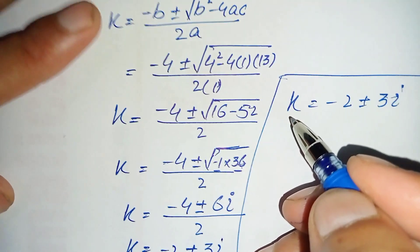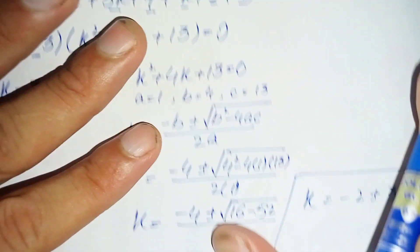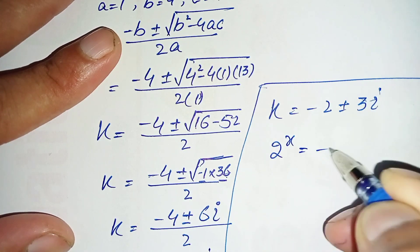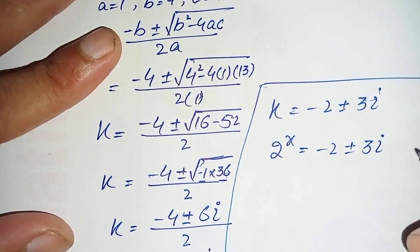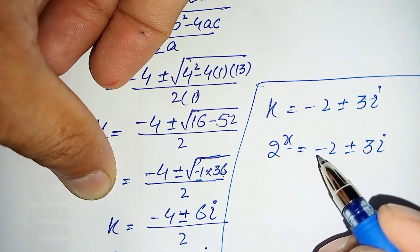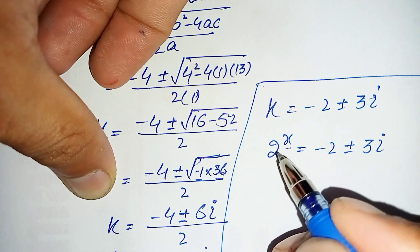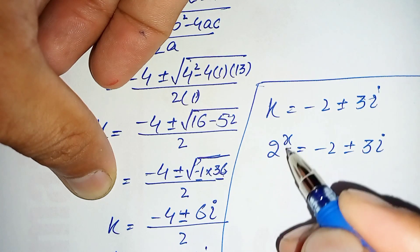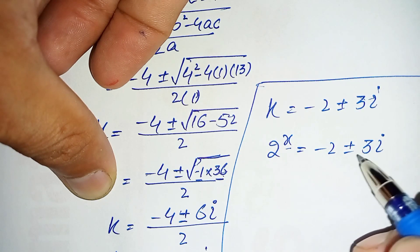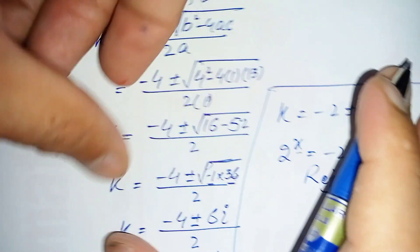Going back to our substitution, k equals 2 raised to power x. So 2 raised to power x equals minus 2 plus or minus 3i. We will reject this equation for two reasons: first, the left hand side is a real term while the right hand side is a complex number; second, 2 raised to power x is always positive, whereas minus 2 minus 3 gives a negative value. So we reject this and solve only the equation k minus 3 equals 0.